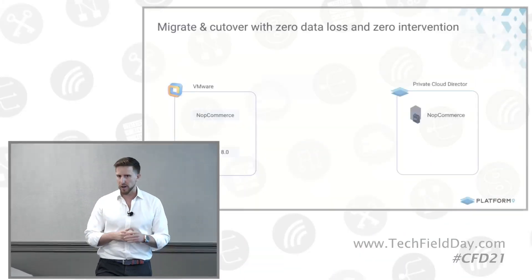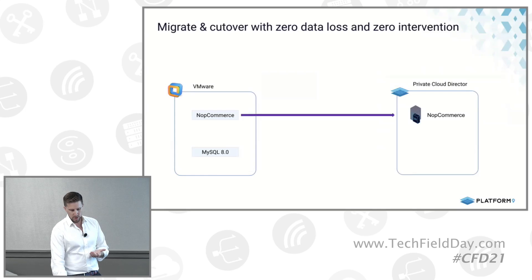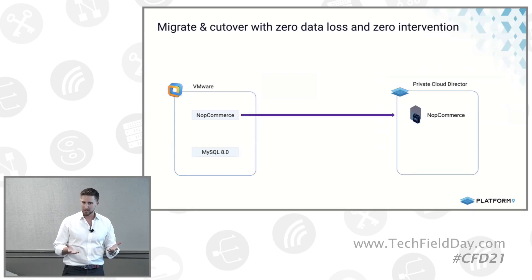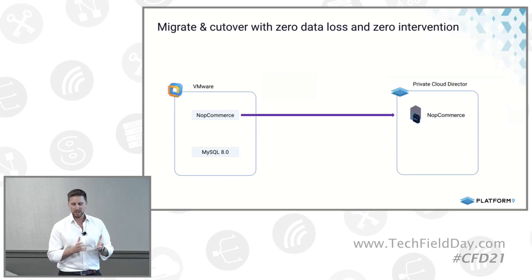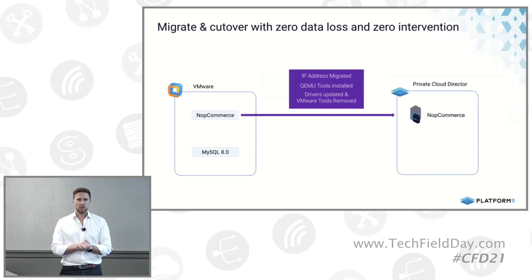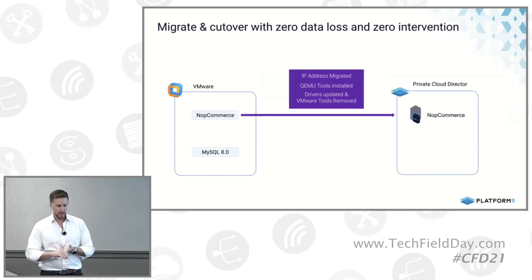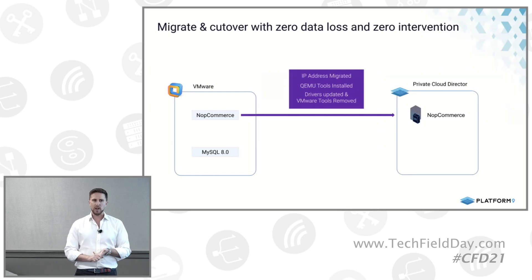What my colleague Taneh is going to share with us is a migration running from VMware into Platform9's Private Cloud Director. We're going to migrate an application server that's actually running an e-commerce product - NopCommerce. This has been around for a while. What will happen during the migration is we'll move the IP address, do QEMU tools installation, update the drivers, and remove VMware tools.